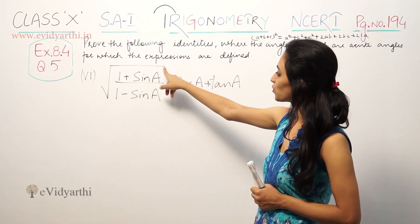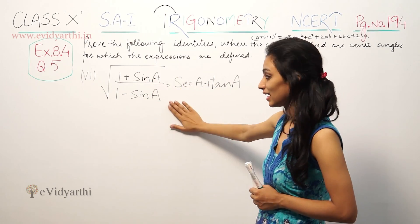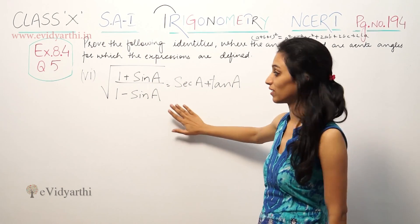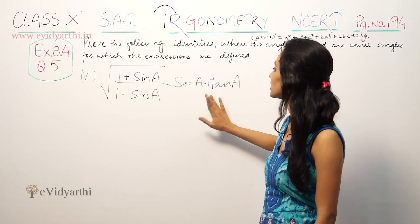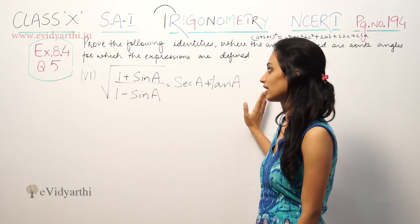So, under root of (1 plus sin A) upon (1 minus sin A) is equal to secant A plus tan A.